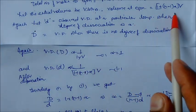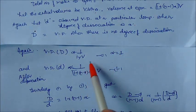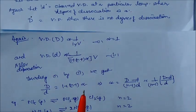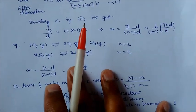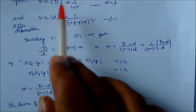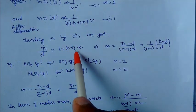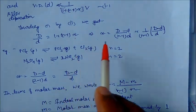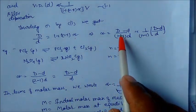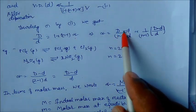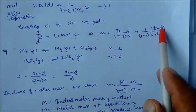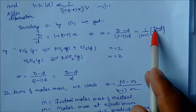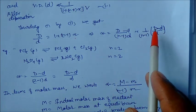Dividing these two equations: D/d = 1 + (n-1)·alpha. Solving for alpha: alpha = (D minus d) / ((n-1)·d), where d is the vapor density at equilibrium and D is the vapor density when there is no dissociation.